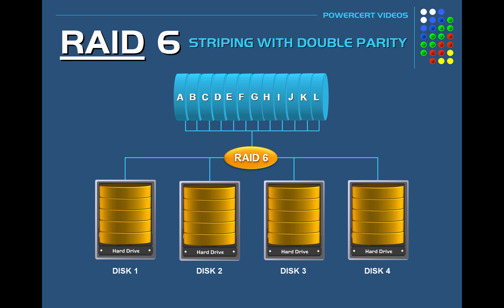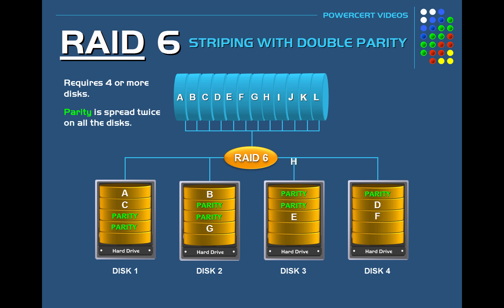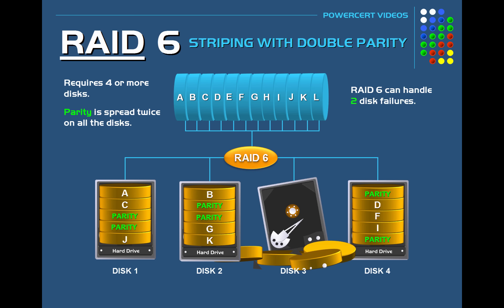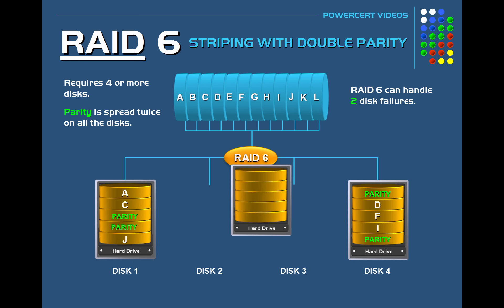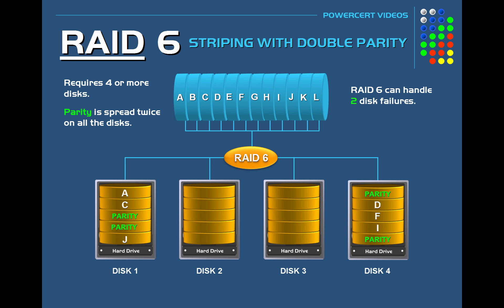That brings us to RAID 6. In order to use RAID 6 you need to have four or more disks. RAID 6 is just like RAID 5 where the data is striped across all the disks and parity is also spread on all the disks. But the difference is that in RAID 6, parity is spread twice on all the disks. The reason for this double parity is so that it can handle two disk failures at the same time. So in a RAID 6 setup, if two disks were to fail at the same time — which is pretty rare — no data would be lost. All you would have to do is replace the failed disks, and then RAID 6 would use the double parity from the other disks to rebuild the data on the new drives.